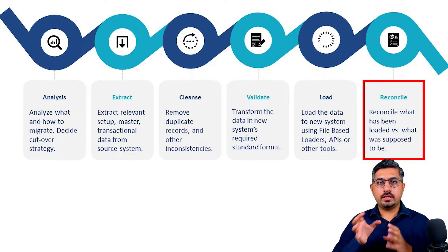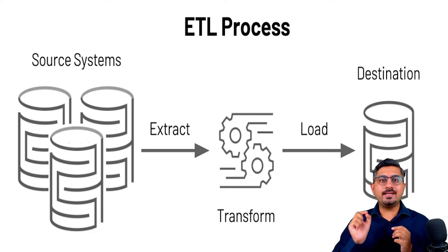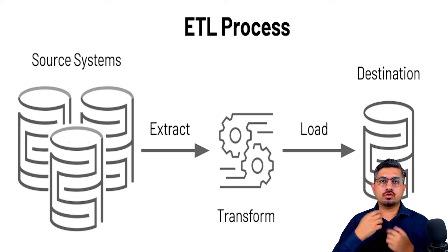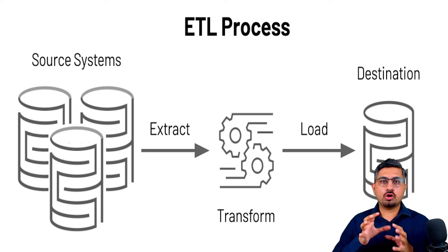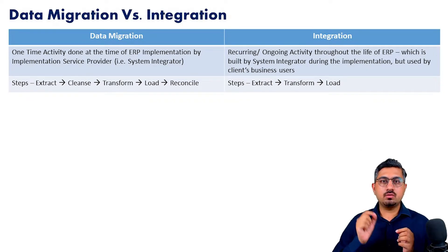Integrations are relatively simpler in terms of the number of process steps. They are typically called ETL — extract, transform, and load — which means the data needs to be extracted from the source system, transformed into the format required by the other system, and loaded into the other system. Those are typically the steps involved in integration.